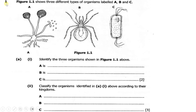So we have question one, which reads: figure 1.1 shows three different types of organisms labeled A, B, and C. Part A, Roman numeral 1: identify the three organisms shown in figure 1.1. You need to identify what type of organism is organism A, organism B, and organism C. Then Roman numeral 2 says: classify the organisms identified in part 1 according to their kingdoms. Once you identify them, you classify them into the kingdom they belong.